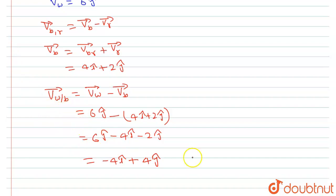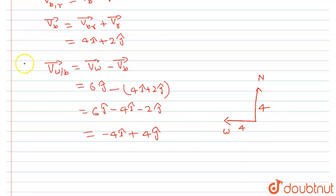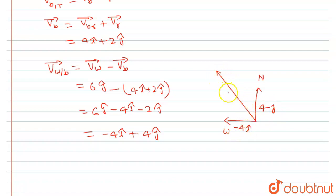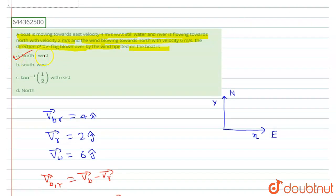From this result, the velocity of the wind with respect to the boat is minus 4i plus 4j. Minus 4i means it is in the west direction, since we assumed east as the positive x-axis. Plus 4j is in the north direction. Both magnitudes are equal to 4, so the resultant points in the northwest direction. Therefore, the flag points in the northwest direction, and option A is correct. Hope this answered your question. Thank you.